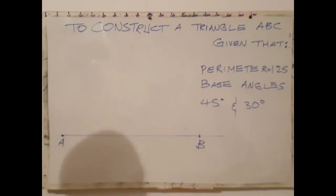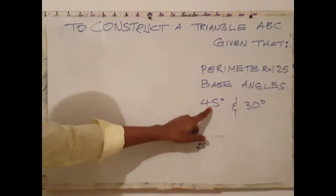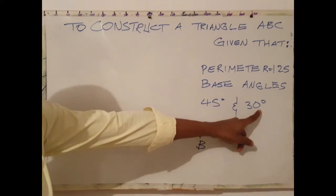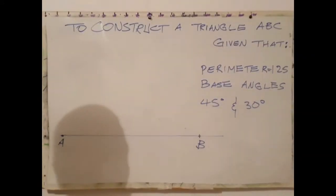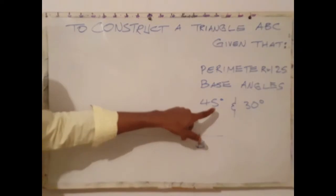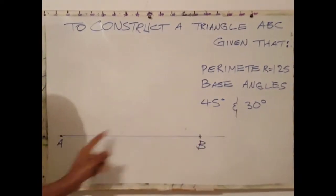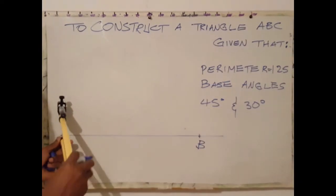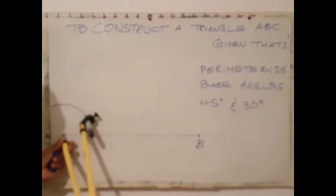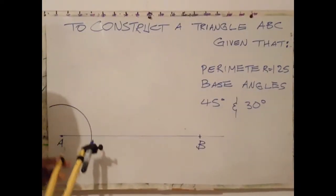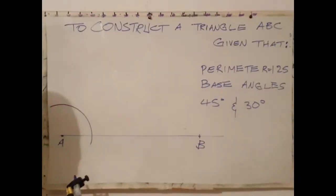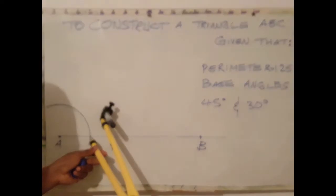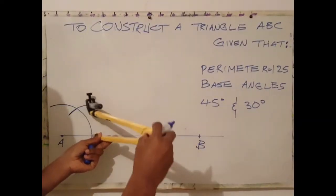The next step is to construct a 45° angle at one end and at the other end, a 30° angle. I will start by constructing my 45° angle at point A. To do that, open your compass to a suitable radius, describe an arc. Without changing the radius, place the compass at the point where the arc meets line AB and describe your first arc.